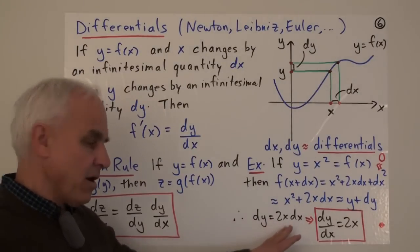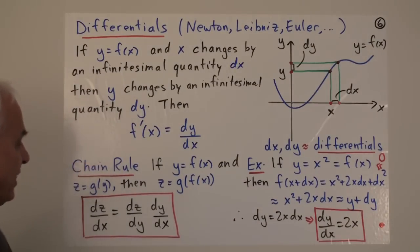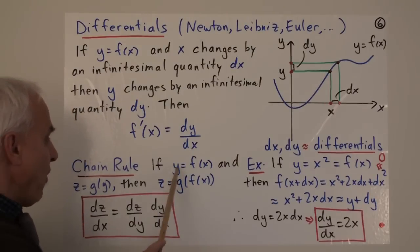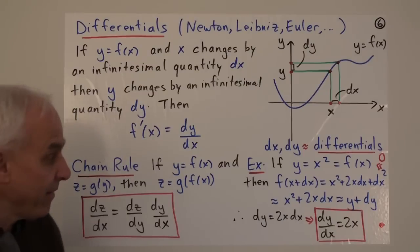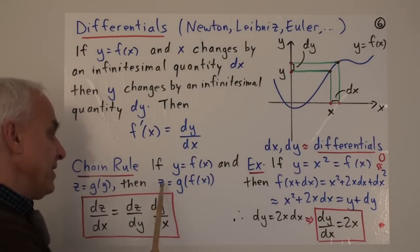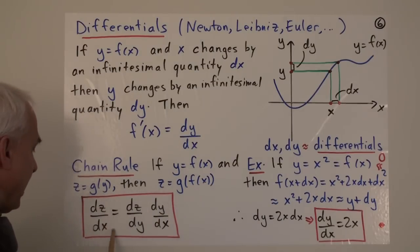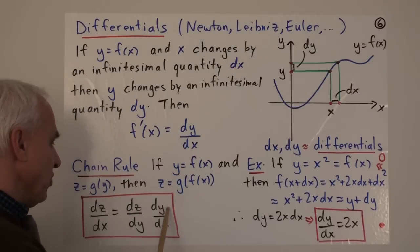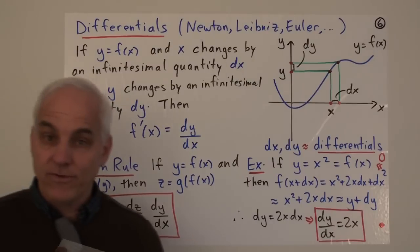One advantage of thinking about differentials is that the chain rule is particularly simple. If y equals f(x) and z equals g(y), so z depends on y and y depends on x, then z equals g(f(x)) — a composite function. The chain rule says dz/dx equals dz/dy times dy/dx. When you state the chain rule in terms of differentials like this, it is easy to understand and almost obvious.